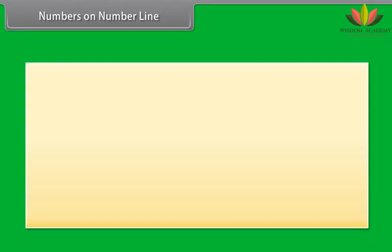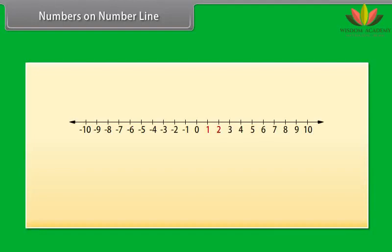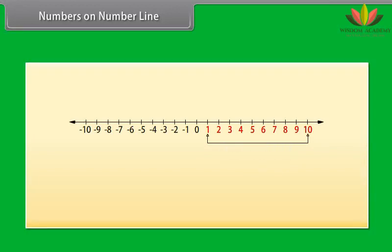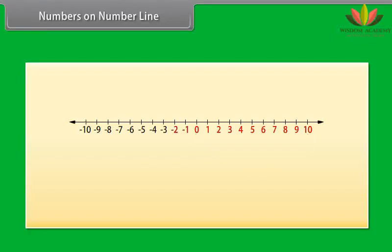Numbers on the number line. On a number line, numbers 1, 2, 3, 4, and so on are called natural numbers, denoted by the symbol N. If we include the number 0 with the natural numbers, then the numbers are called whole numbers, denoted by the symbol W. All these numbers together with the negative numbers are called integers, denoted by symbol Z.